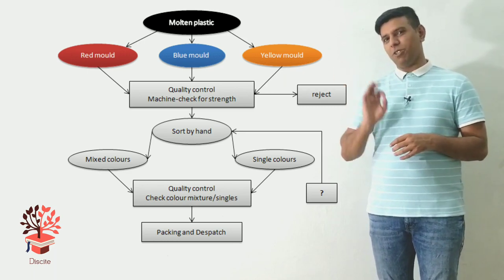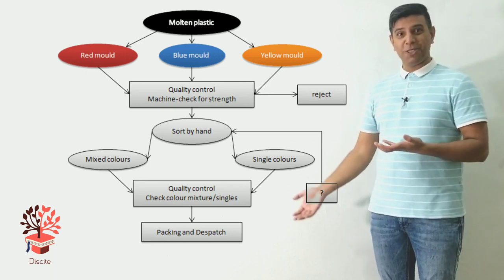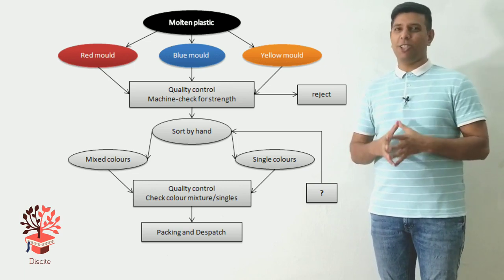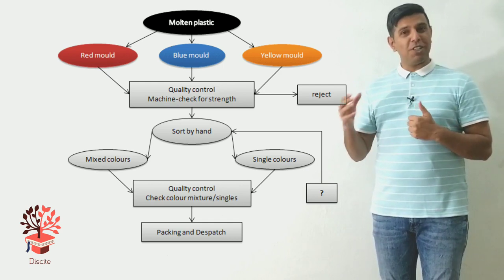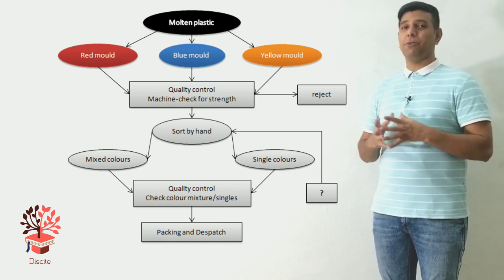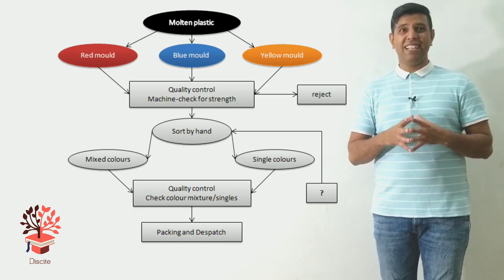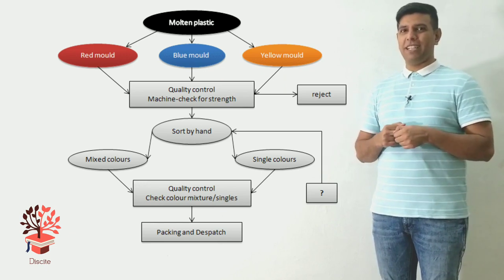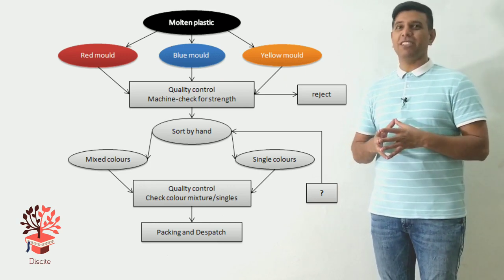It means the product that you bought has gone through a quality control. What you've learned from this quality control thing is that you need to have a product if you want to have a quality control. So it means from the moulds, you've already got the product that is coloured plastic paperclip. That's why it's going through a quality control. The quality control says machine check for strength. Machine check means there's no human involvement. When a machine does that, we call it automatic.